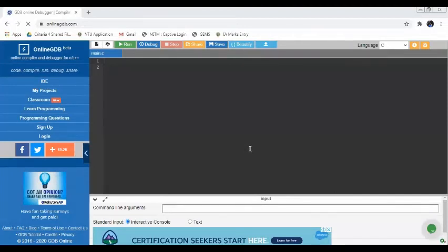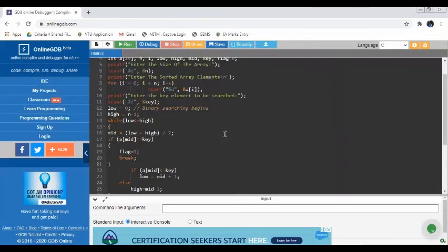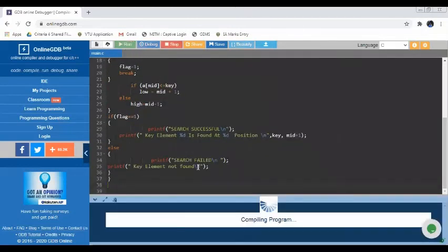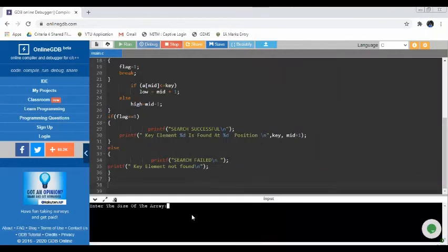Now, let us see how to run the program. First, in the GDB compiler, let's type the program that we have discussed. Now, once it is done, click on the run button. It is getting compiled. Now, it is asking to enter the size of the array. Just decide the size of the array as you wish. Here, I take the size of the array as 5. And just press enter key.